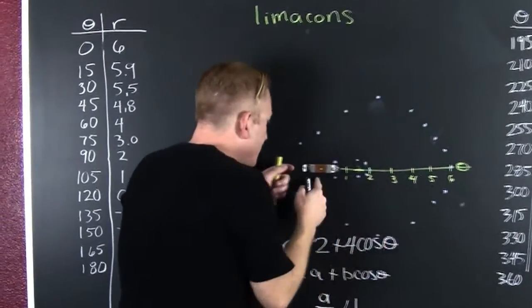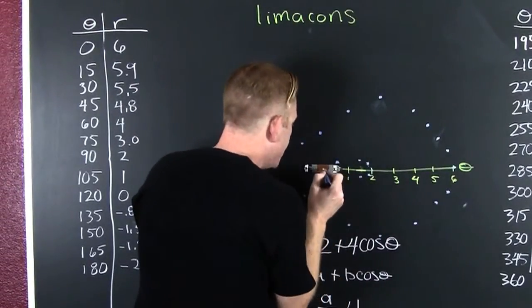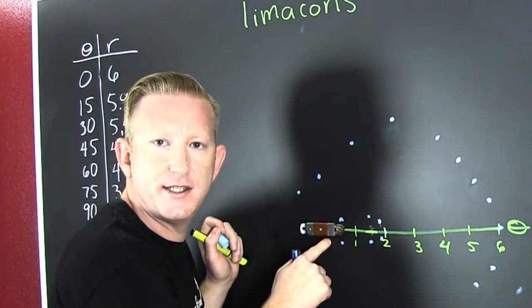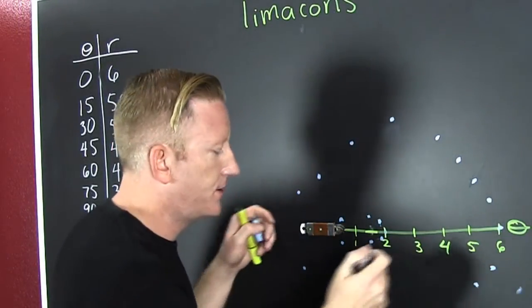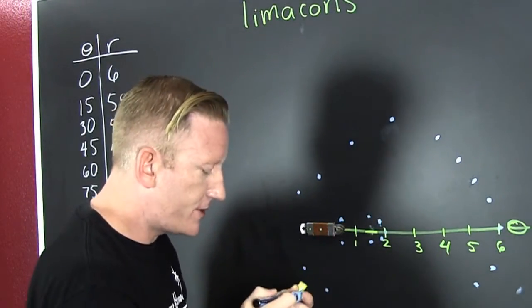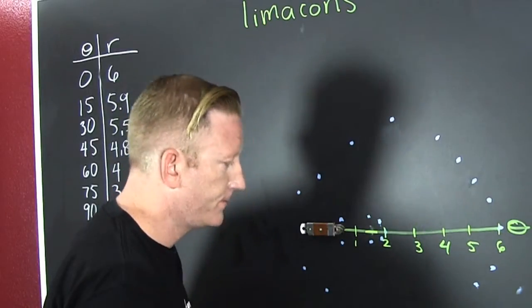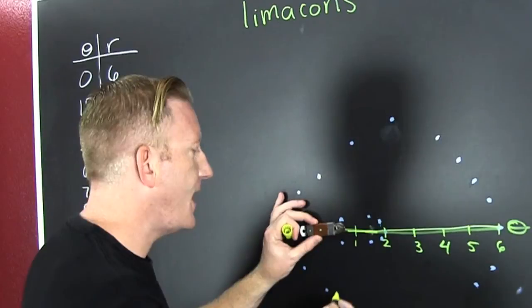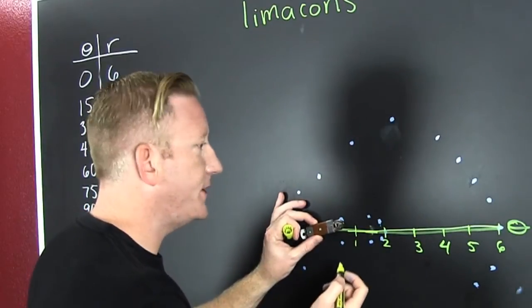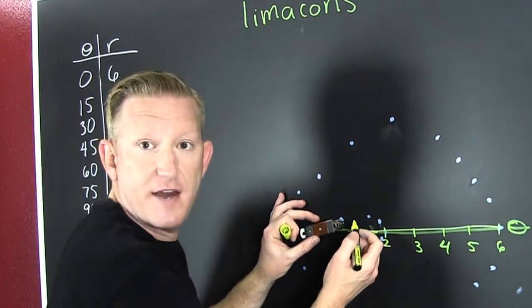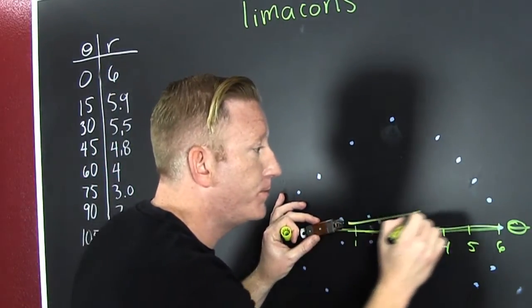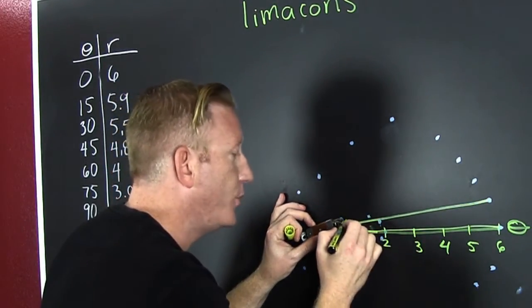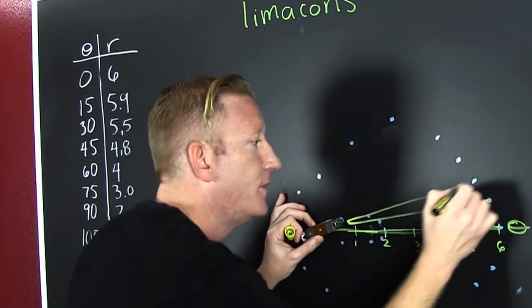When theta is zero, it's six — so you go out six far. Then at 15 degrees, we're at 5.9. Then at 30 degrees, we're at 5.5.